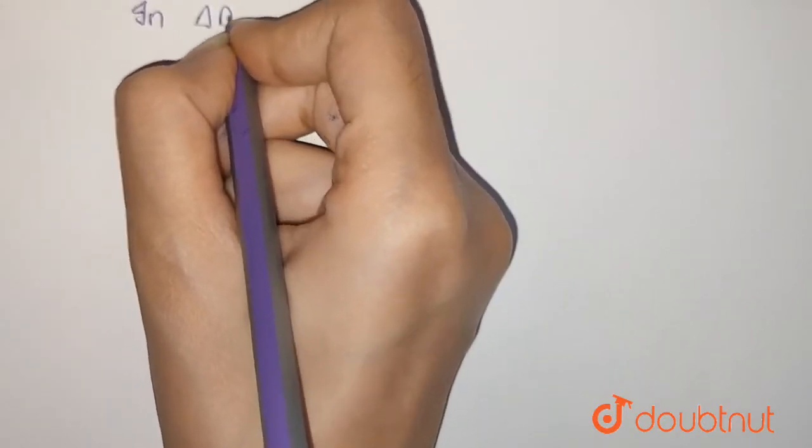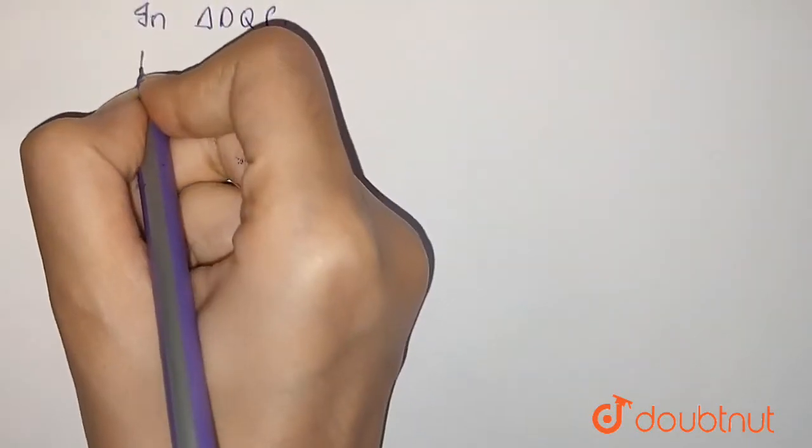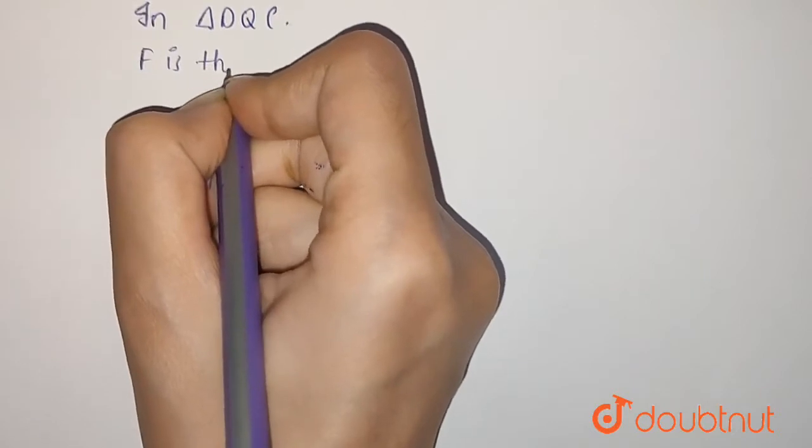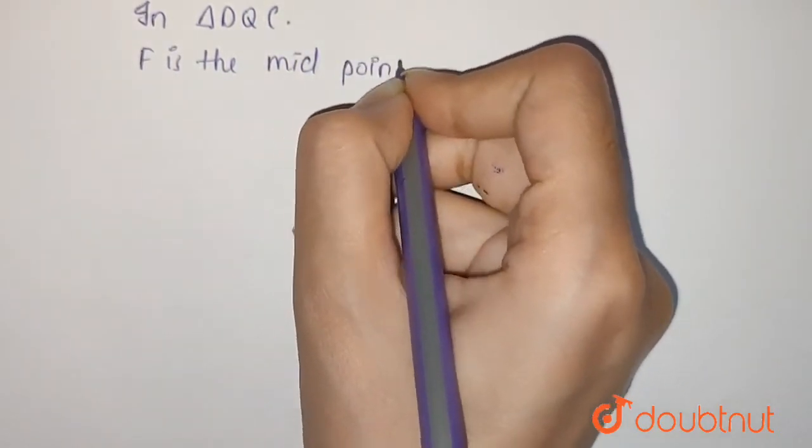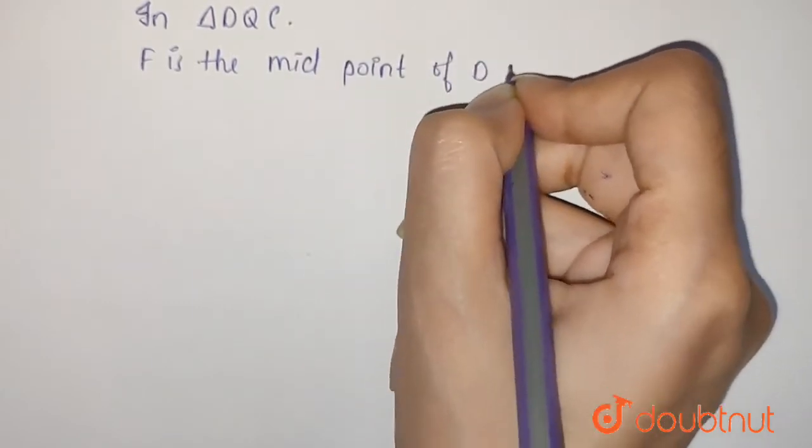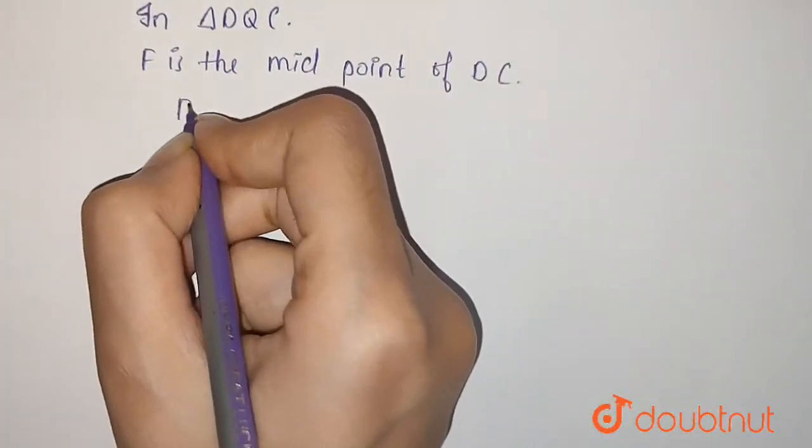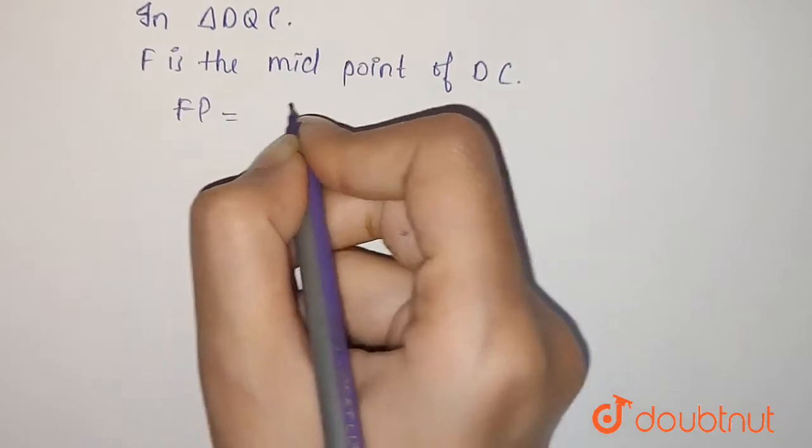In triangle DQC, F is the midpoint of DC, so FB will be equal to CQ.